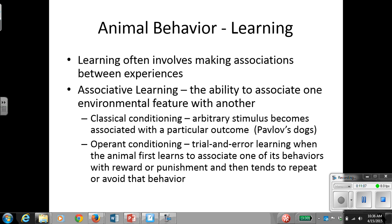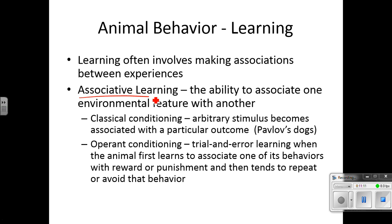Learning often involves making associations between experiences. Associative learning is the ability to associate one environmental feature with another. Classical conditioning is where an arbitrary stimulus becomes associated with a particular outcome — this is Pavlov's dog: he gave the dog treats and rang a bell repeatedly, and at some point when he rang the bell, the dog automatically began salivating because it associated the bell with food.